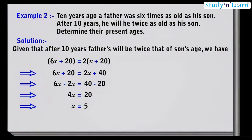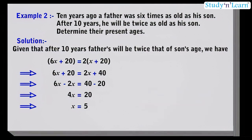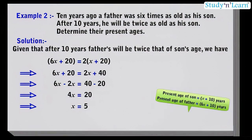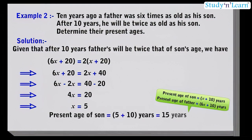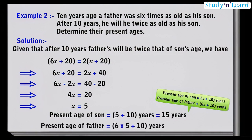Putting this value in the expression of present age of son and father: present age of son is equal to 5 plus 10 years, which is 15 years. Present age of father is equal to 6 into 5 plus 10 years, which is equal to 40 years.